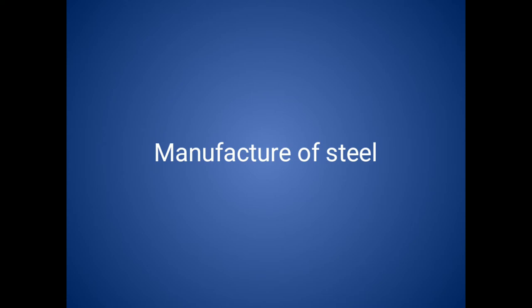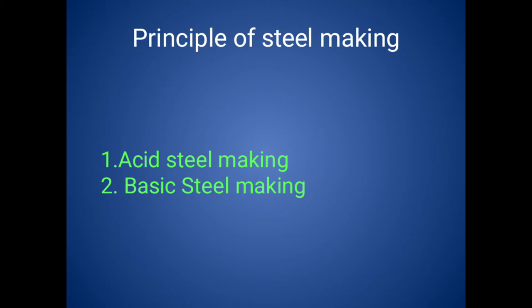Good morning students. Today's class is manufacturing of steel. Generally, the charge for manufacturing of steel is pig iron in liquid state, in which we oxidize the impurities like silicon, manganese, and carbon present in the pig iron — we need to eliminate these to get steel. Generally, it involves two methods: acid steel making and basic steel making. These two methods depend upon the nature of the slag produced.